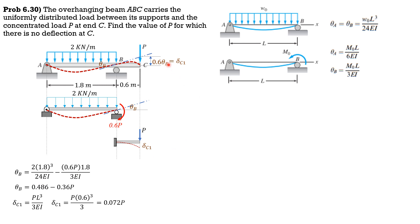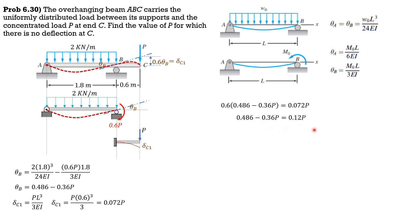Solving: 0.486 − 0.36P = 0.12P, so 0.486 = 0.48P, giving P = 0.486/0.48 = 1.012 kN.